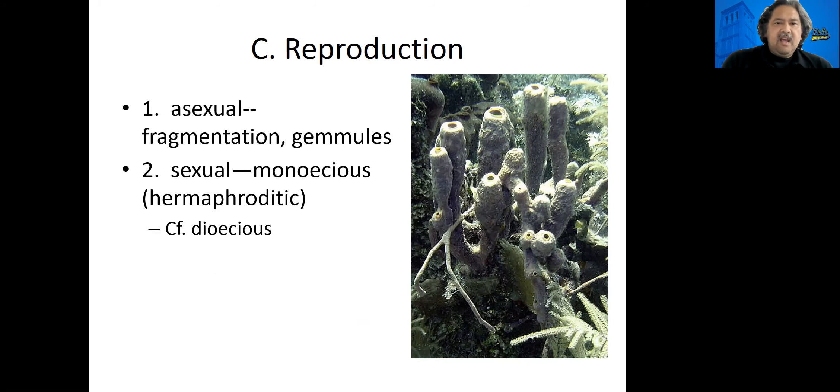Sponges can also reproduce sexually. They are monoecious, another term is hermaphroditic, which means the same thing. Monoecious, if you look at the word, mono means one and ecious has to do with house, so one house. You have both male and female in one house. The term dioecious for comparison means two houses, so you have males separate from females. Humans are dioecious because there are separate males and separate females. So sponges are monoecious. A monoecious organism has both male and female sex organs, and these guys can make sperm and egg and reproduce with the fertilization of the eggs by sperm.